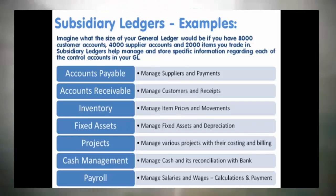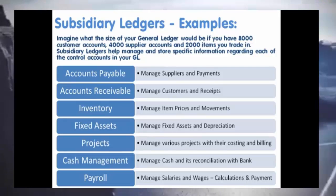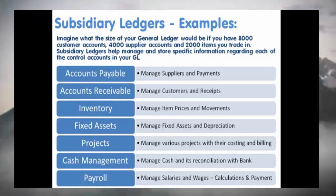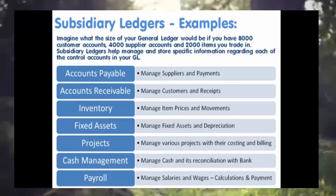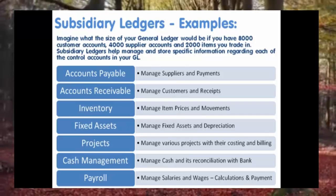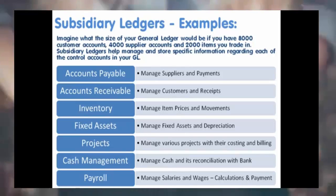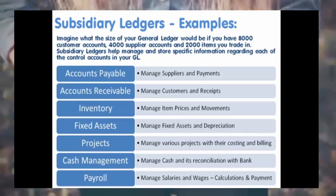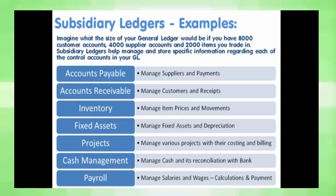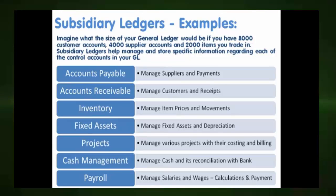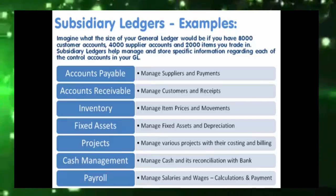Certain companies like real estate builders and construction companies undertake various independent projects and need financial information for each project — in that case a sub-ledger is required for each project. Projects is used to track project milestones, costs, and resources and to make billing to customers. Cash Management sub-ledger is used to manage cash and its reconciliation with bank, providing the current position of cash flows. The Payroll subsidiary ledger can be used to manage salaries and wages, recording calculations and payments made to each employee. Now that we have a basic understanding of GL and its subsidiary ledgers, let's look at some benefits of having an automated general ledger system.